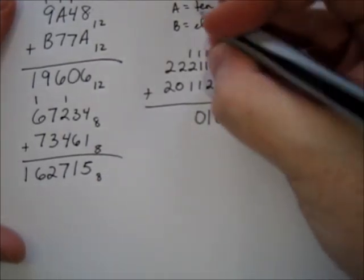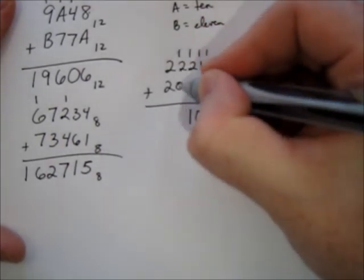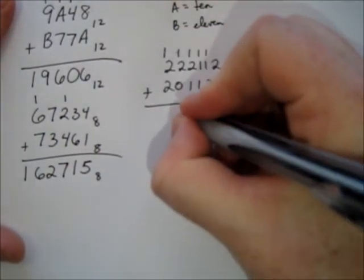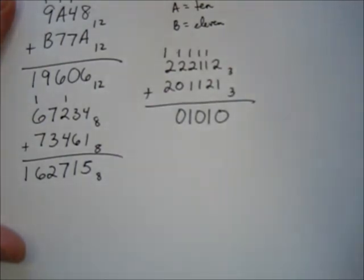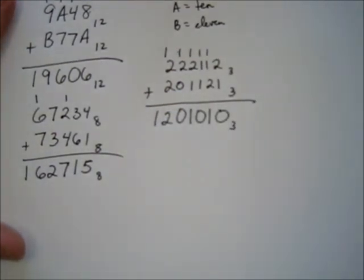1 plus 2 plus 1 is 4, 1 three, 1 left over. 1 plus 2 plus 0 is 3, 1 three, 0 left over. 1 plus 2 plus 2 is 5, 1 three, 2 left over. So we get 1, 2, 0, 1, 0, 1, 0, base 3.